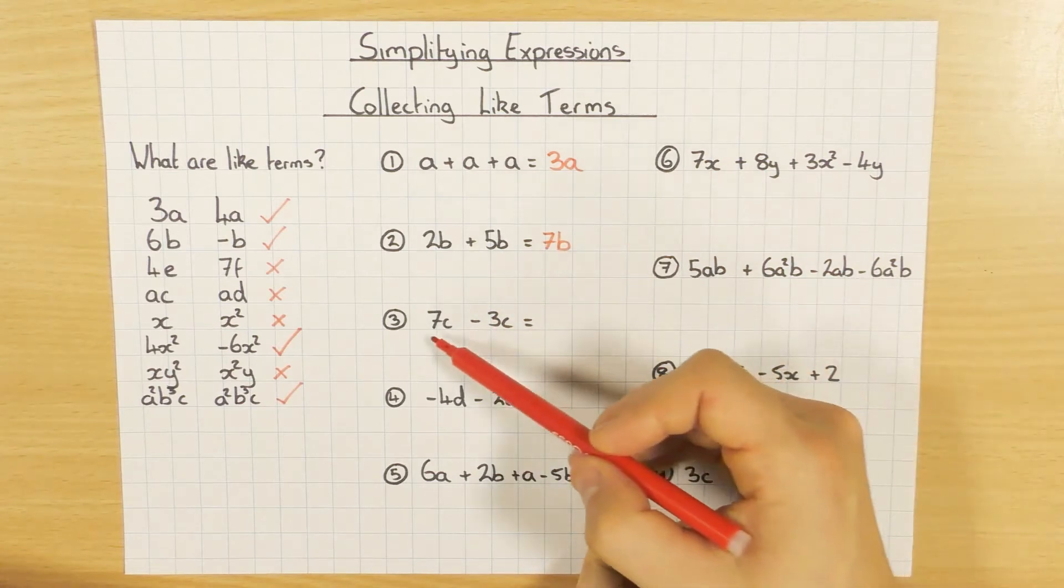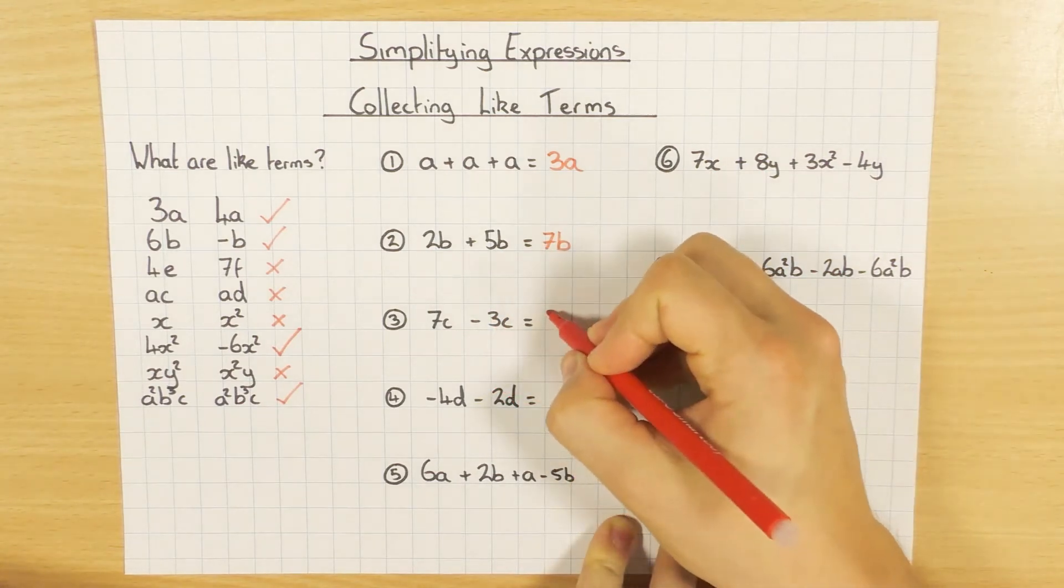This one here, C and C. So it's fine. 7C, take away 3C, 4C.